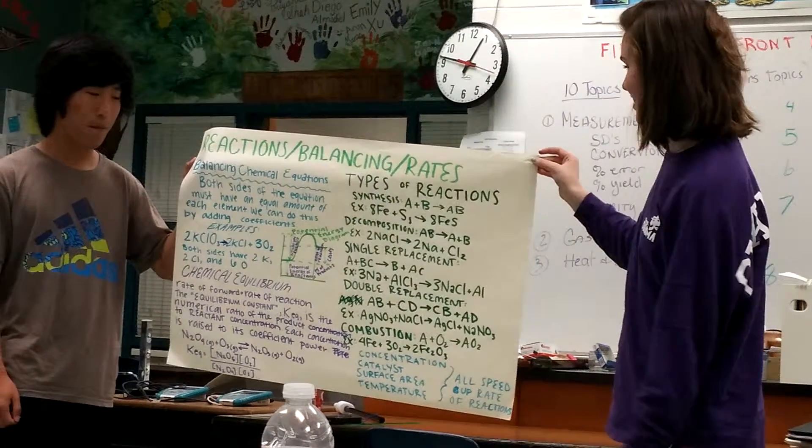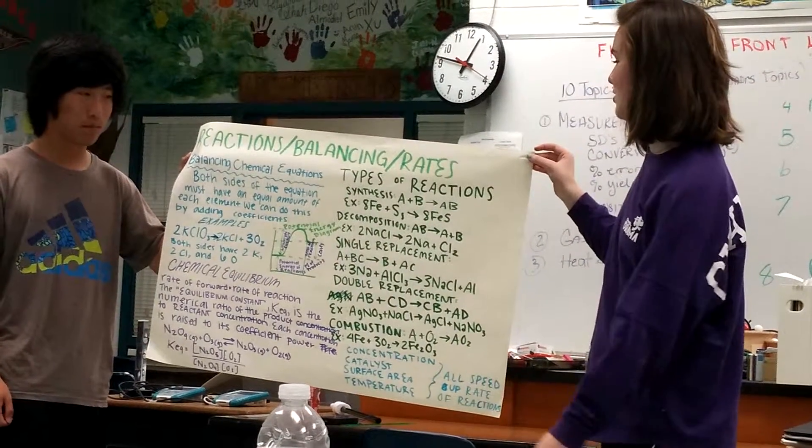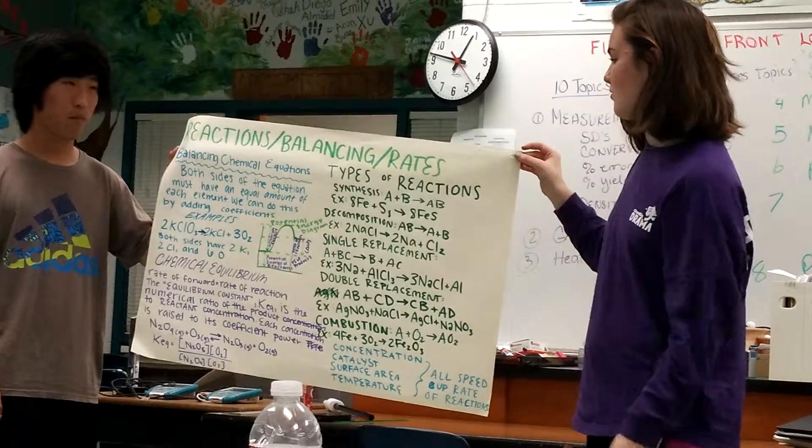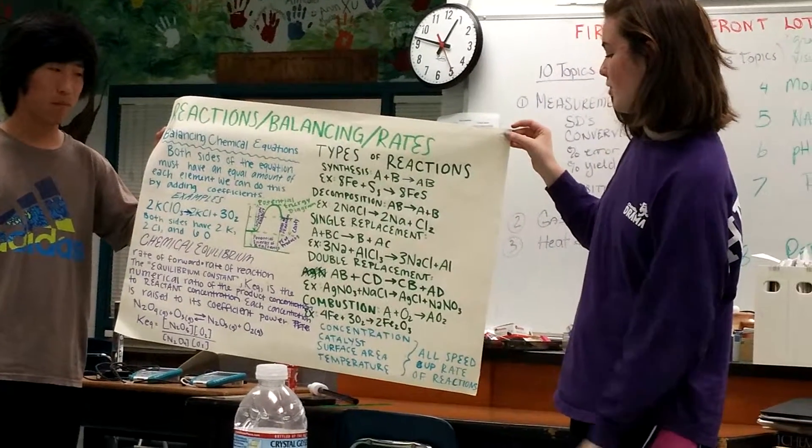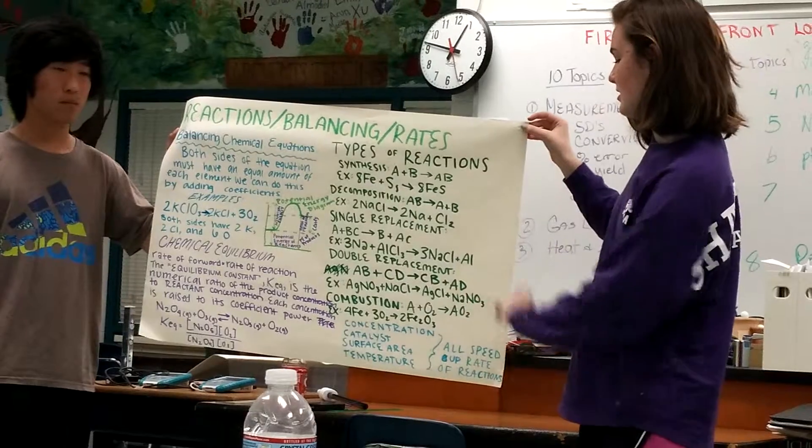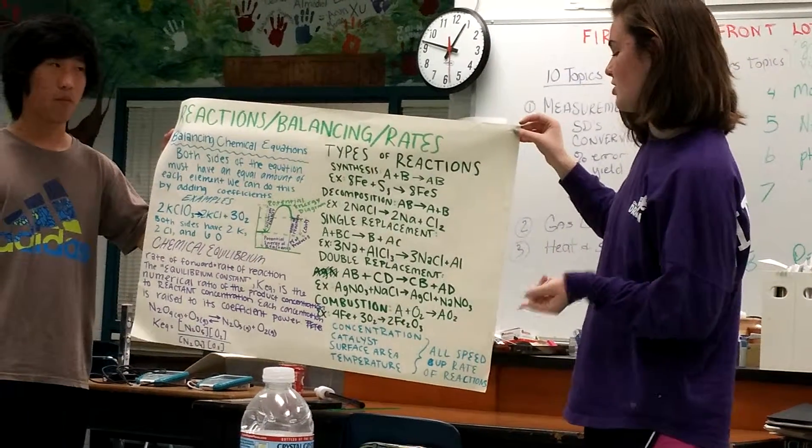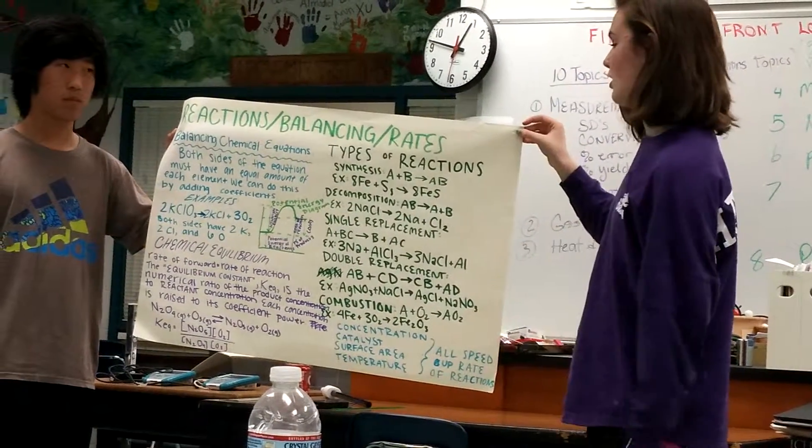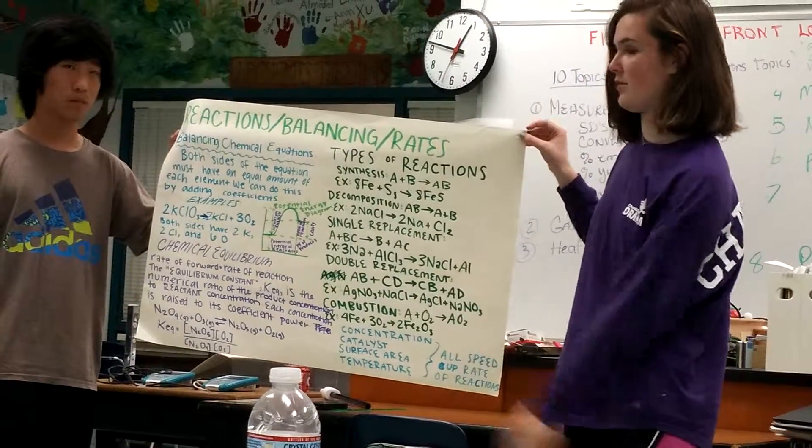So the last thing is rates of reaction. Different things can affect the speed of the rates of reaction. And one thing to remember is the acronym CCST, which stands for concentration, catalyst, surface area, and temperature. And all of these speed up the rate of the reaction.